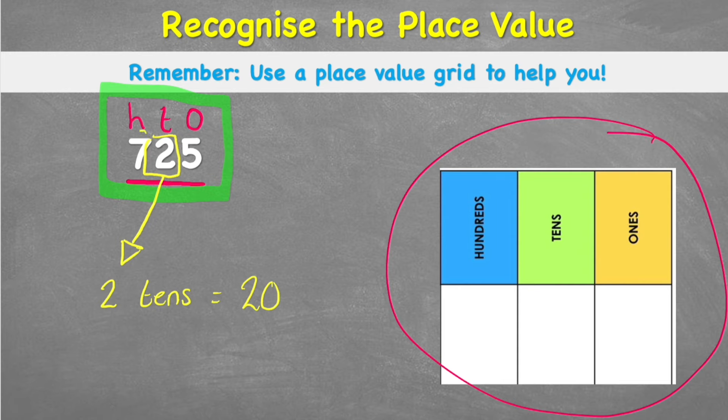And the 7 is not just a 7, it's actually 7 hundreds, which equals 700. But our 5, because it's in the 1s column, actually only represents 5 ones, which equals 5.